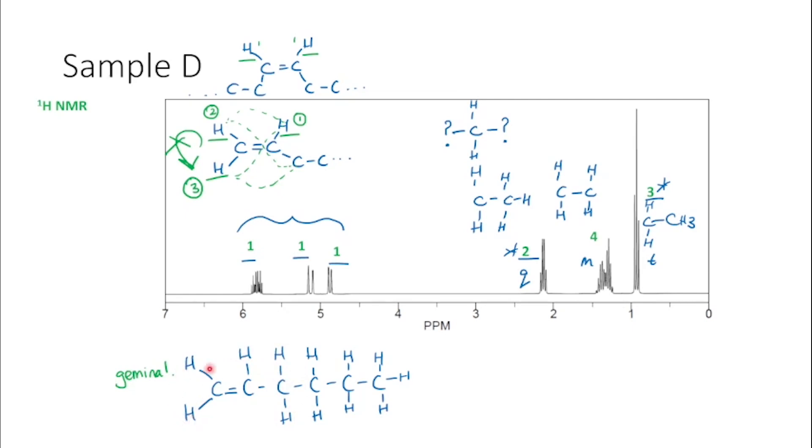And then what happens here, because these are in two different environments, is that they have a different effect on this proton splitting signal. So we end up with sort of a triplet, doublet, doublet, quite a complicated multiplet, which makes it this signal here.